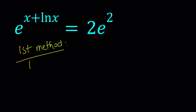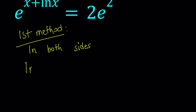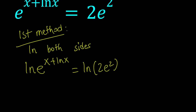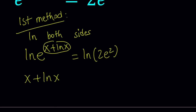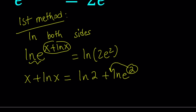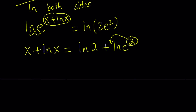For my first method, this is something that we commonly use — I'm going to take ln of both sides. If you do, you get: ln of e to the power x plus ln x equals ln of 2e squared. Using the properties of logarithms, we can move the exponent to the front, giving us x plus ln x multiplied by ln e, which equals 1, so we don't have to worry about it. The right-hand side breaks down as ln 2 plus ln e squared, and that power moves forward giving us 2 times ln e, which equals 2.